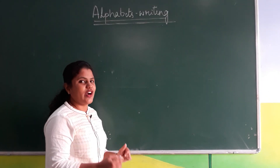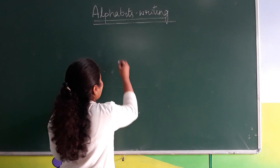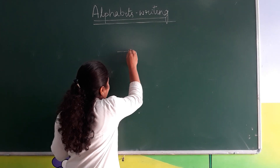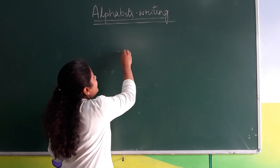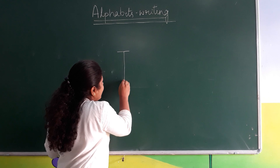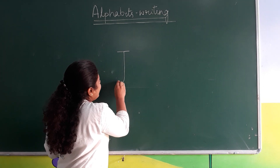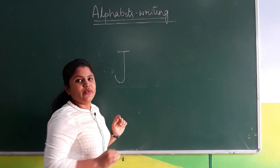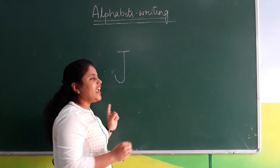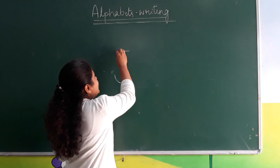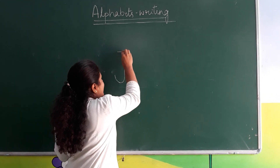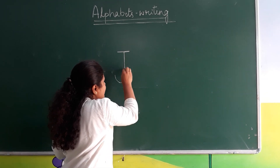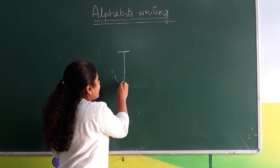Come, let's see how to write letter J. Sleeping line and curve. Which letter? J. Sleeping line and curve.